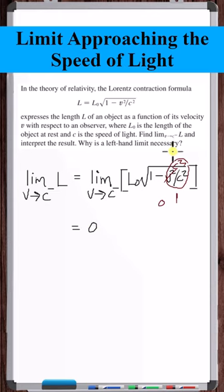That means that from the perspective of an observer, if something is traveling at the speed of light, you can't see it. Why is a left-hand limit necessary? The velocity has to approach the speed of light from below because nothing can exceed the speed of light.